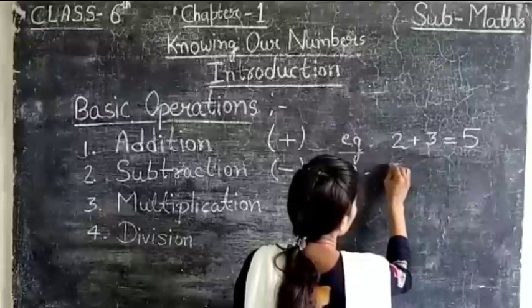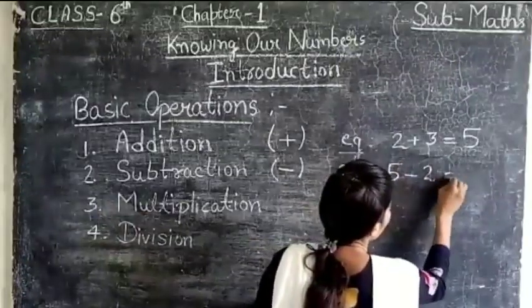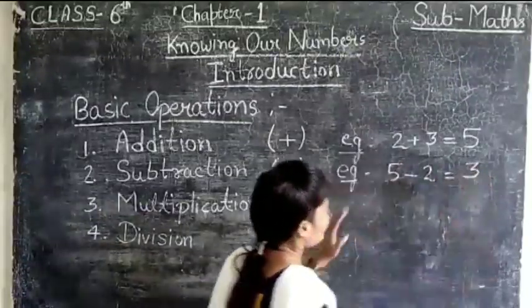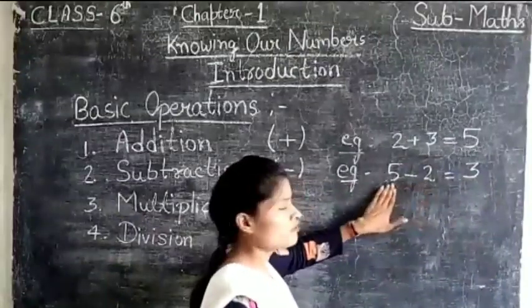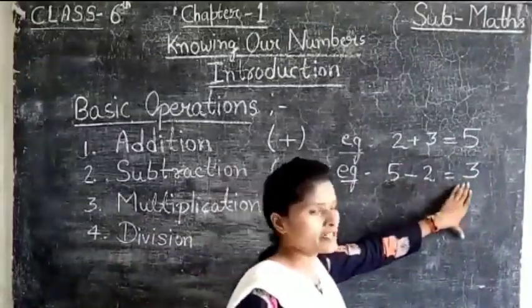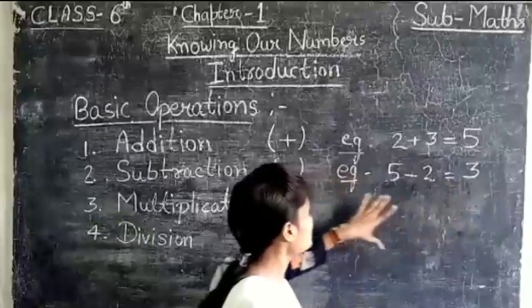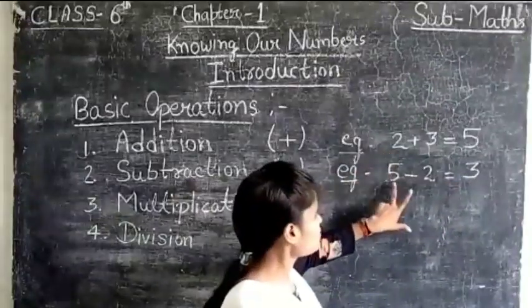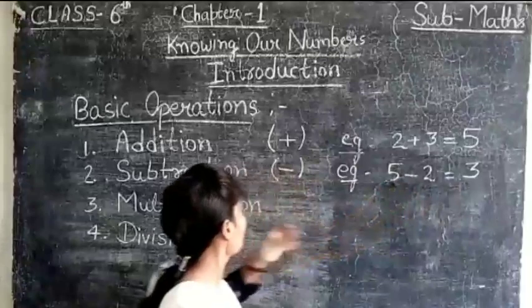That means 5 minus 2 equals to 3. If we subtract 2 from the digit 5, we get the digit 3. This is called the subtraction operation of two digits on two digits 5 and 2.